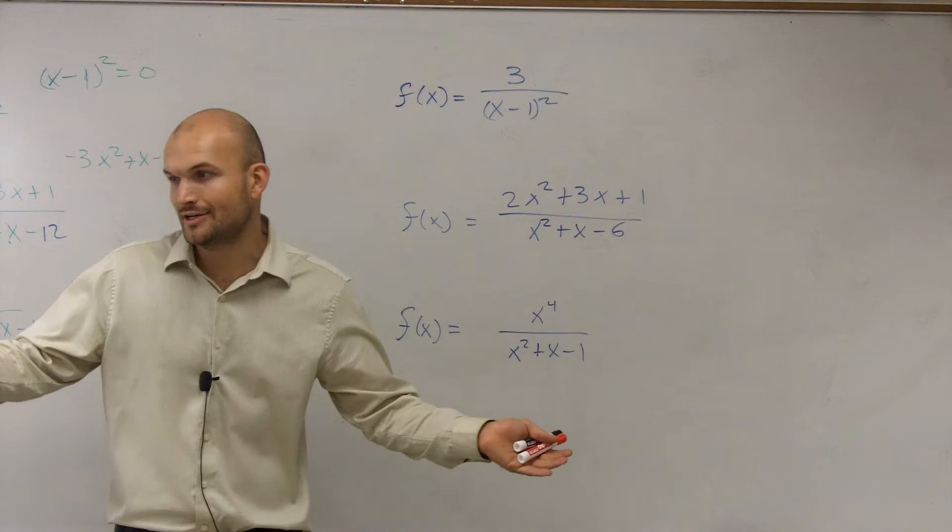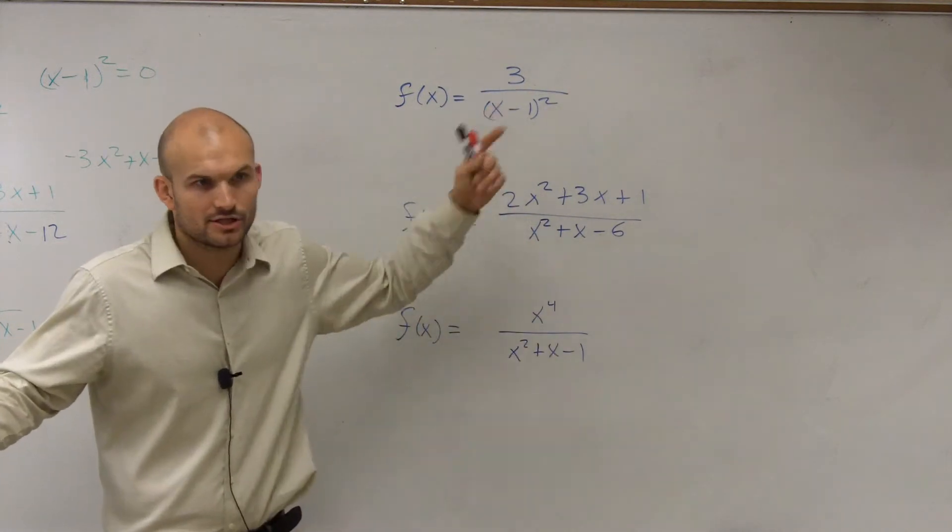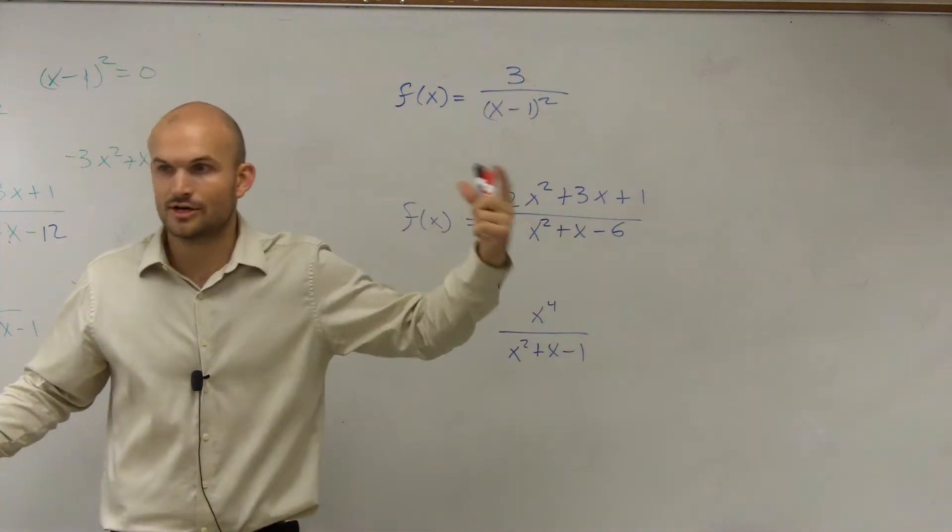So to find the vertical asymptote, horizontal, well we had to do the test, right? We had to compare the degrees. It's either greater than, less than, or equal to.